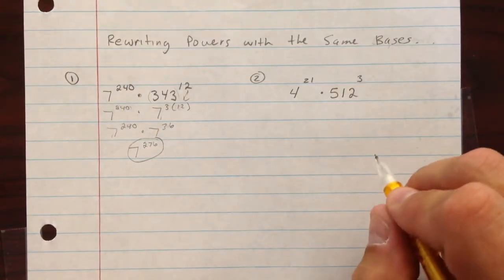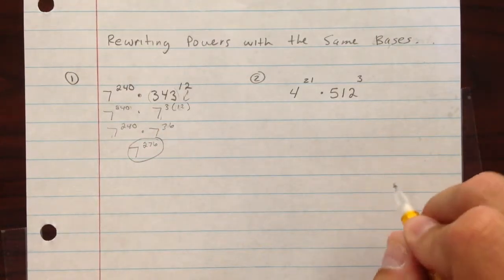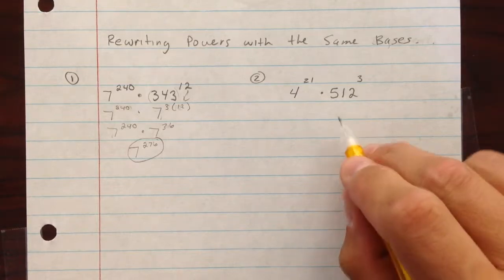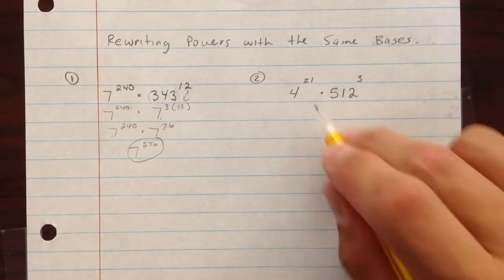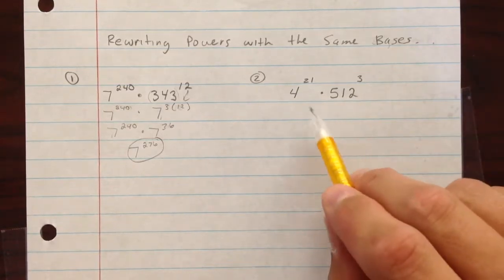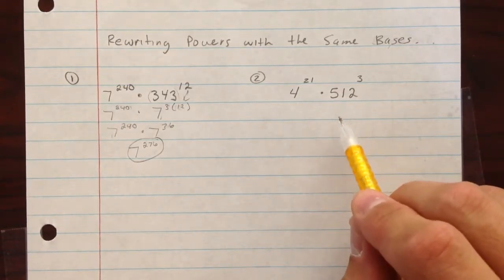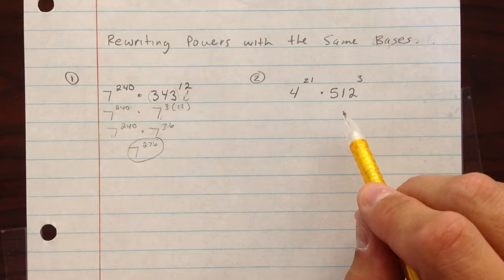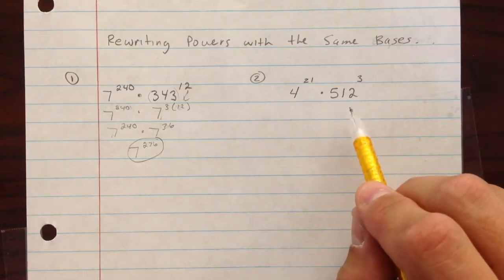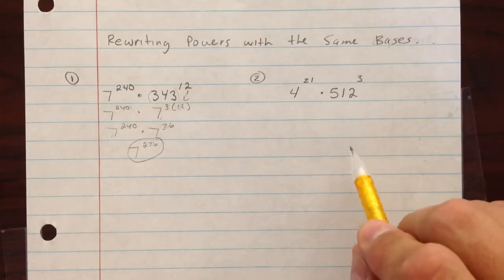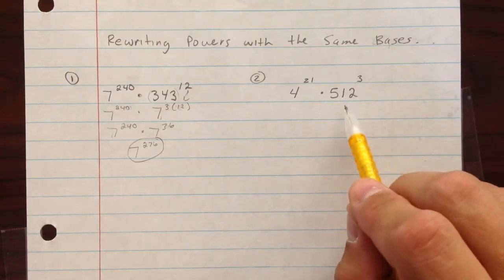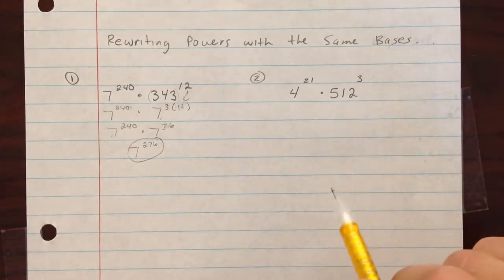We'll talk about how we're going to use it later on in some equations. Another example: we can take 4 times 4 times 4 and try to figure out how many times it equaled something, but it doesn't end up equaling 512.